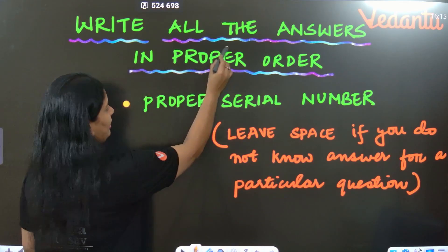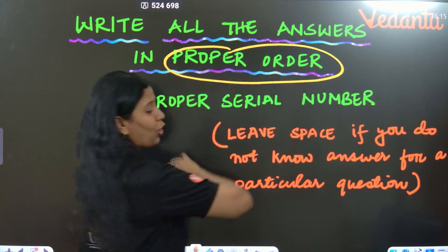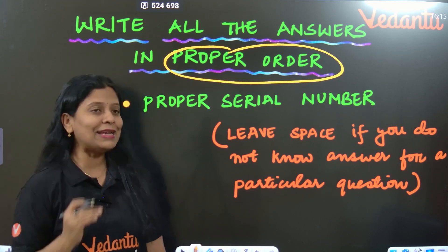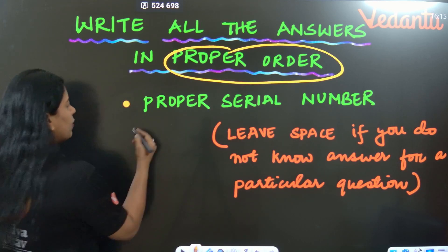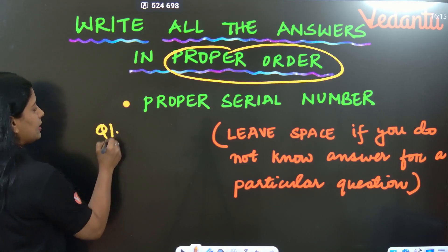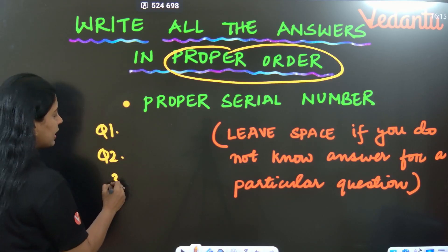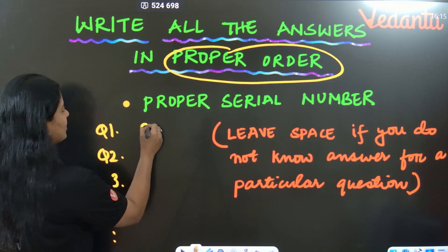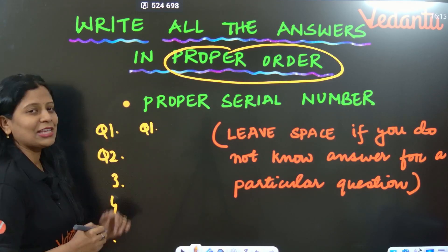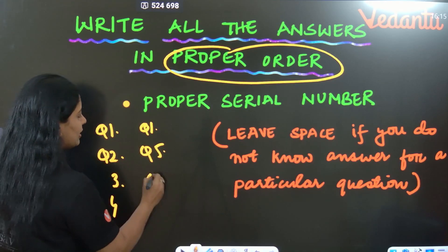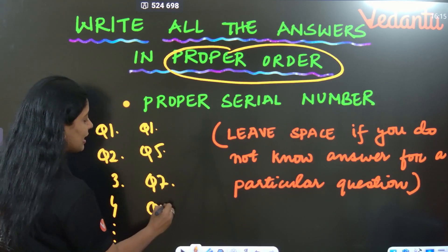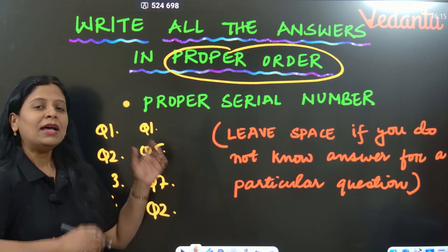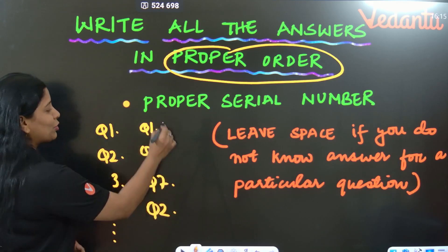Next is the proper order rule. All your answers should be in proper order — in proper serial number sequence. For example, question number 1, then question number 2, then 3, 4 and so on. But some students answer question number 1 then jump to question number 5, then go to 7, then come back to 2. This should not be done.